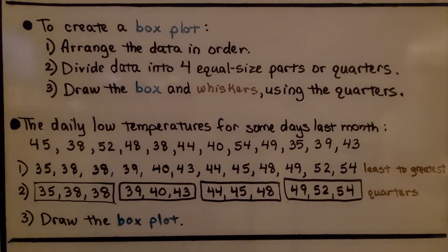To create a box plot, the first thing we do is arrange the data in order. We can put it in order from least to greatest. Then we divide the data into four equal-sized parts or quarters.